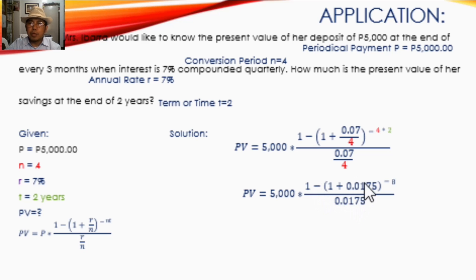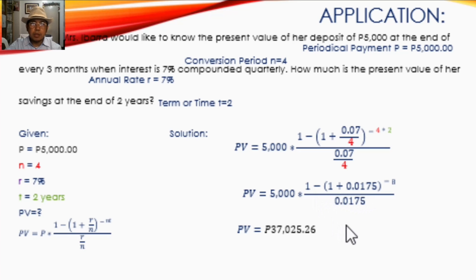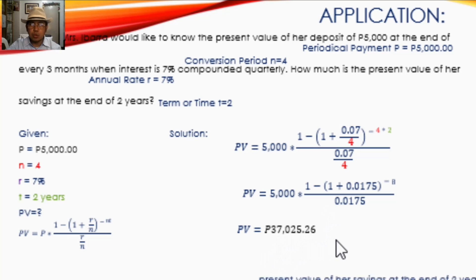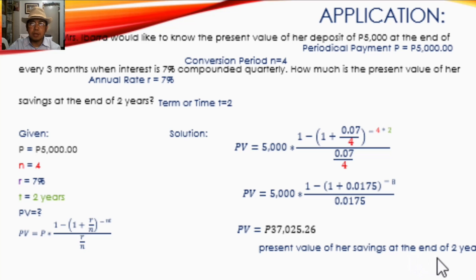Follow along and type this into your calculator. The computation gives a present value of 37,025.26 pesos. That is the present value of her savings at the end of two years.